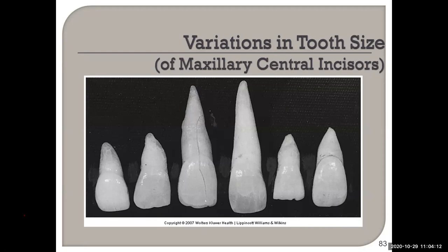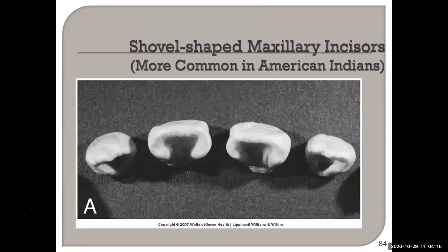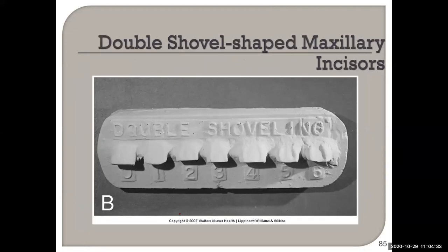Variations in size and shape include shovel-shaped and double shovel-shaped teeth, where the marginal ridges are very pronounced. These are well documented in textbooks.